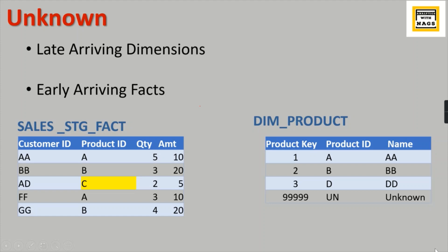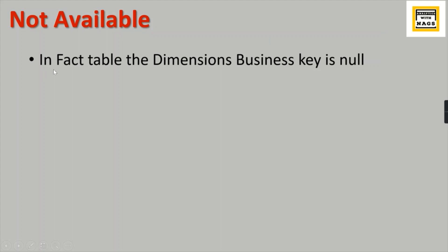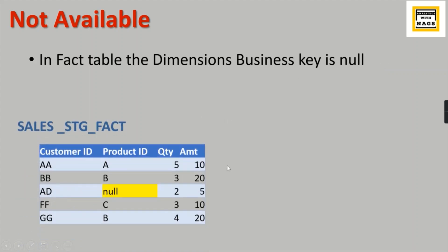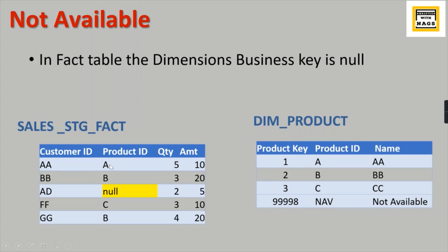What about the not available case? You can apply it when the dimension business key in the fact table is null. In the staging, for the product column, you are getting a null business key itself. Consider how important the product is — without a product, data won't be recorded in the sales. You are selling products, so the product itself being null is not possible. All such cases have to be flagged as not available.